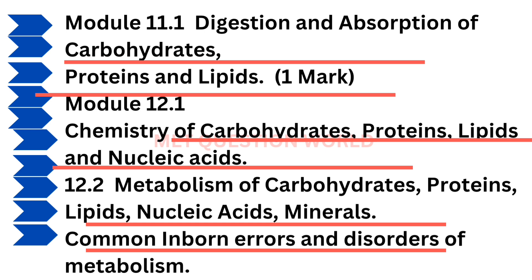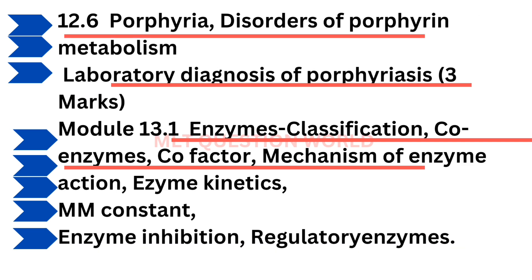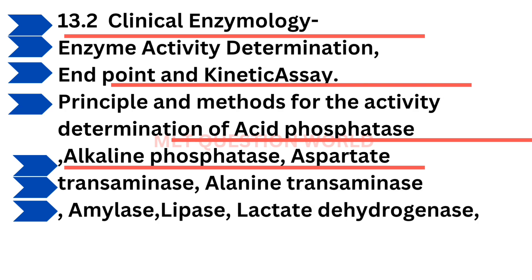Then digestion and absorption of carbohydrates, proteins, and lipids. Then chemistry and metabolism of carbohydrates, proteins, lipids, nucleic acids, and minerals. Porphyria — disorders of porphyrin metabolism, lab diagnosis of porphyriasis. Then enzyme classification, co-enzymes, co-factors, Michaelis-Menten constant, enzyme inhibition, and regulatory enzymes.